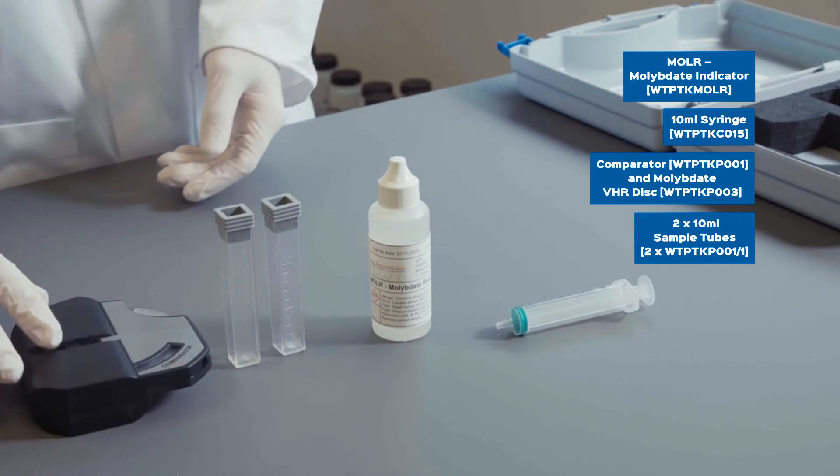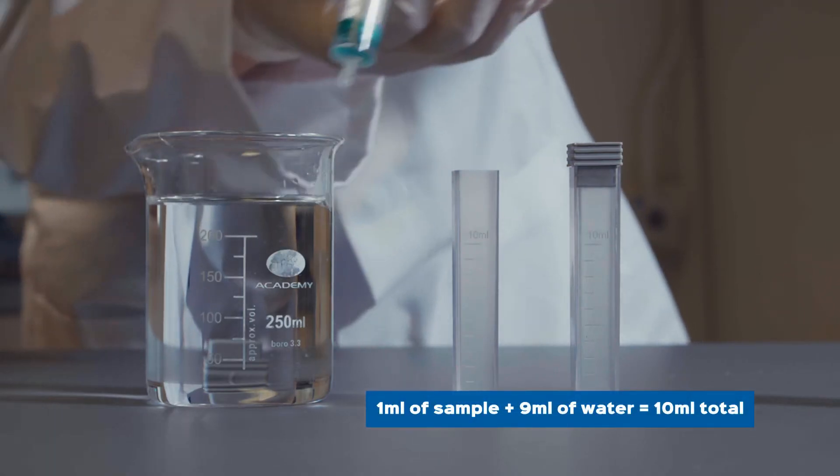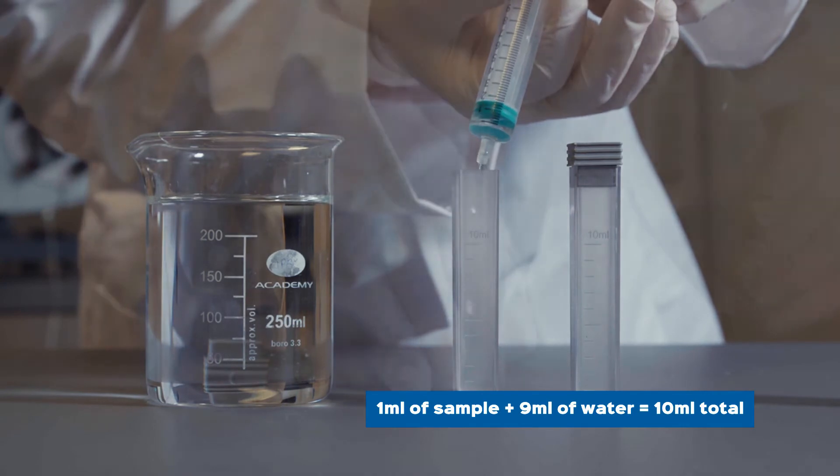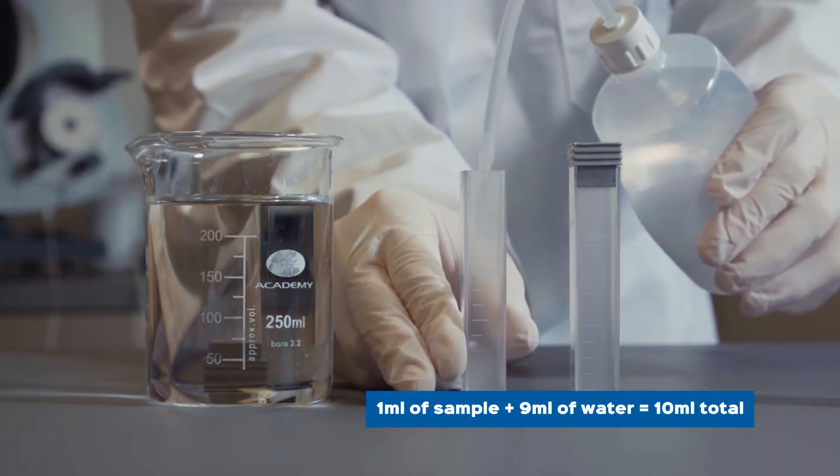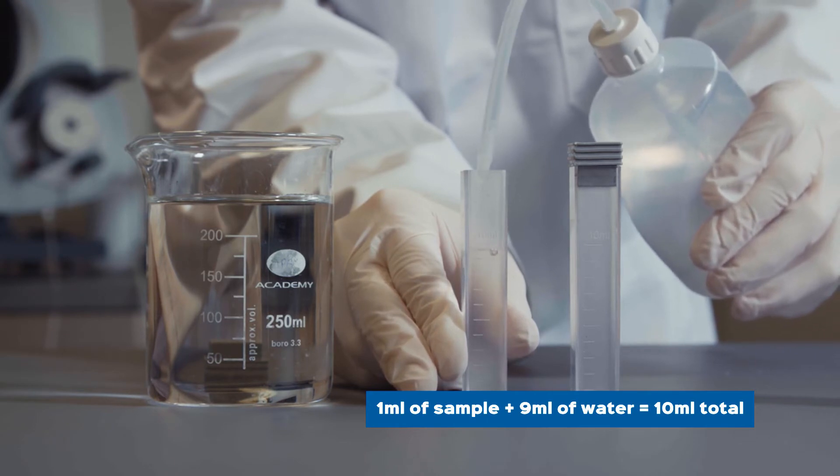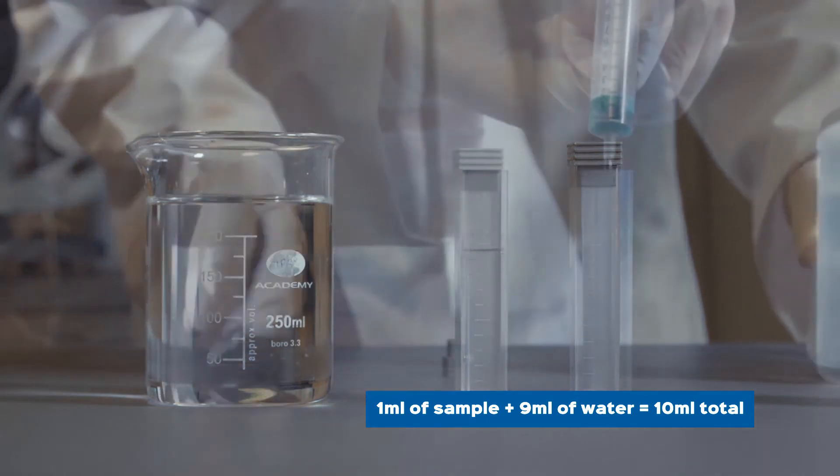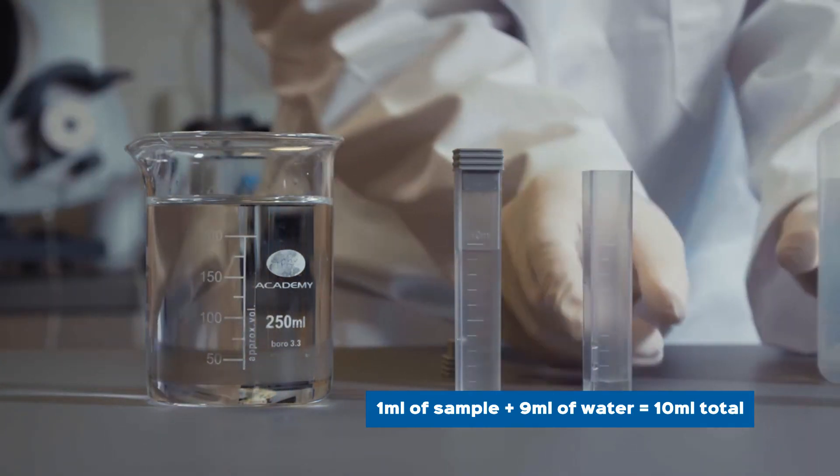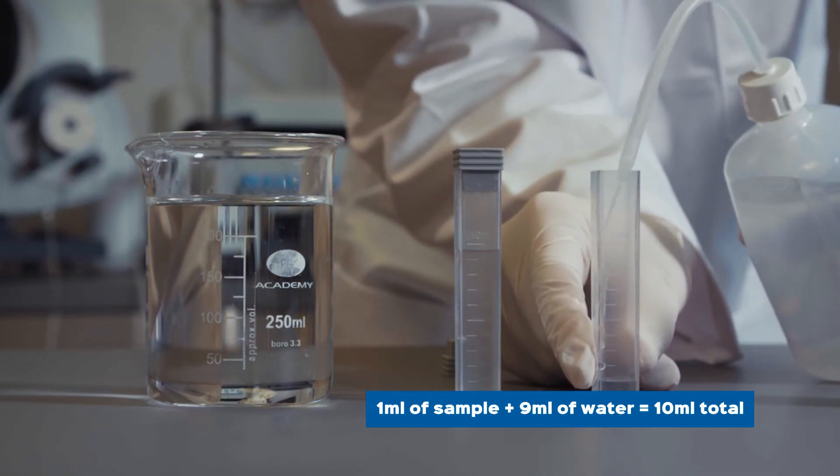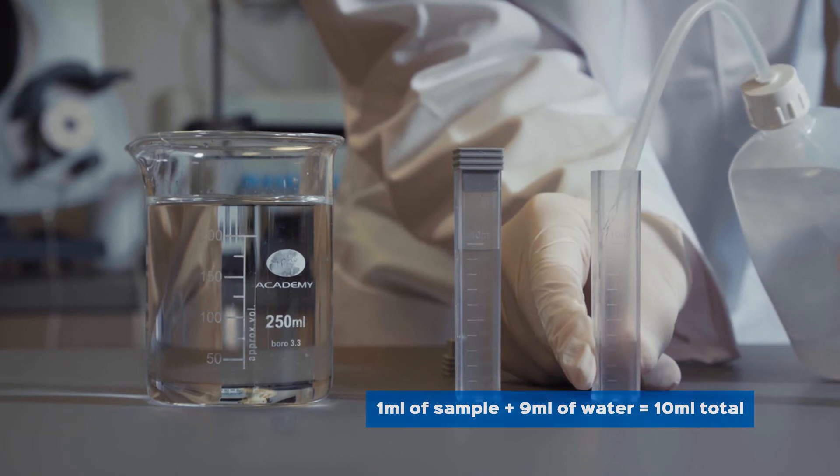Using the syringe provided, transfer 1ml of test sample to one of the two tubes. Using a source of water that does not contain any Molybdate, fill the sample tube with 9ml of water. Repeat the process for the second tube: 1ml of sample and 9ml of water.